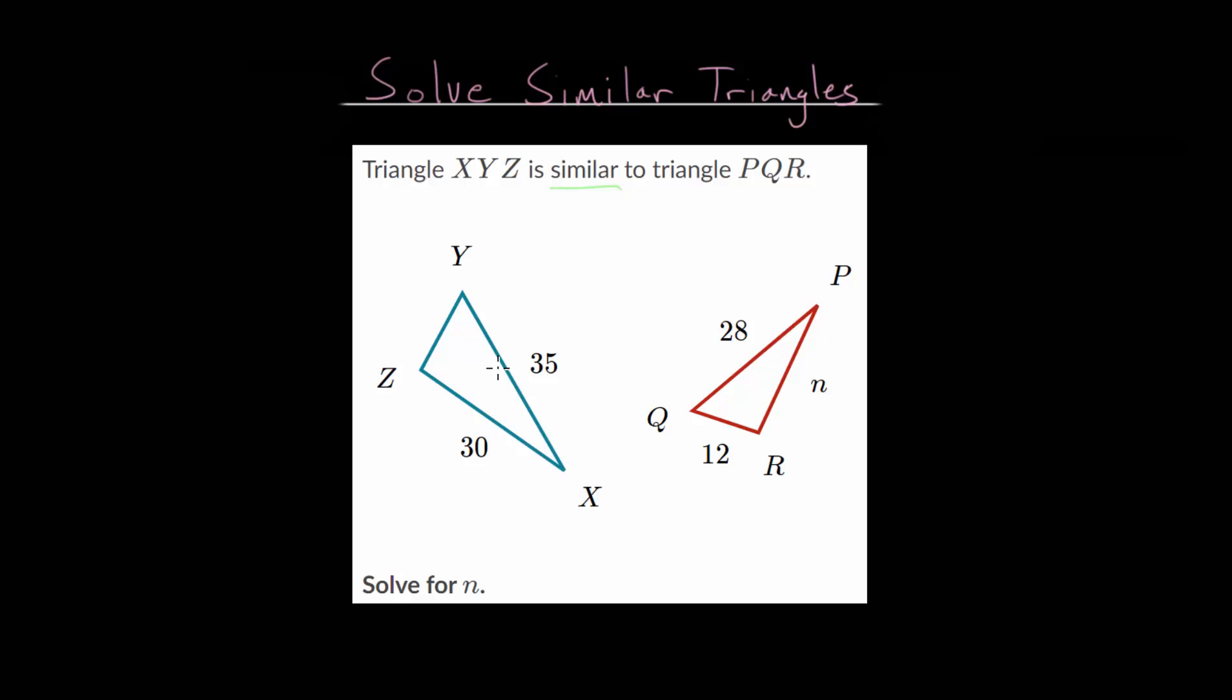And the main fact that we'll use to solve this problem is that similar triangles also have proportional side lengths. Or in other words, one of these triangles is a scaled version of the other triangle.